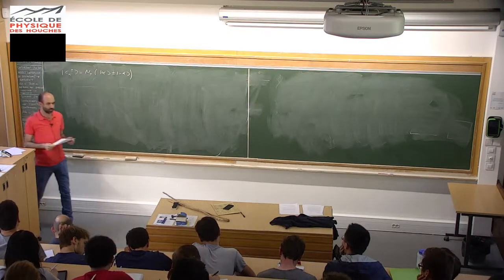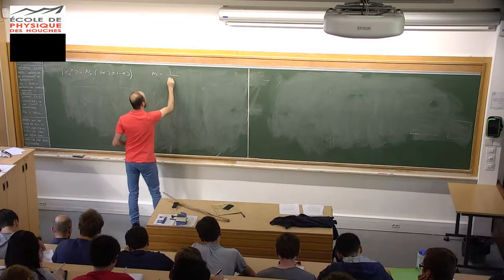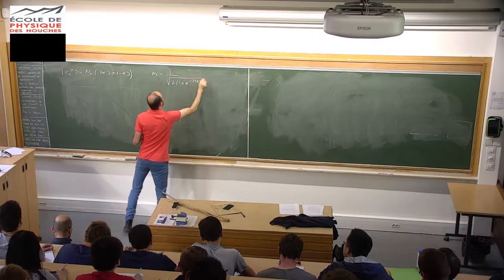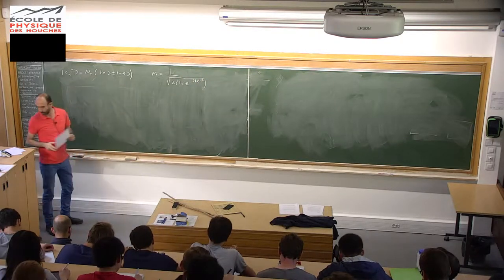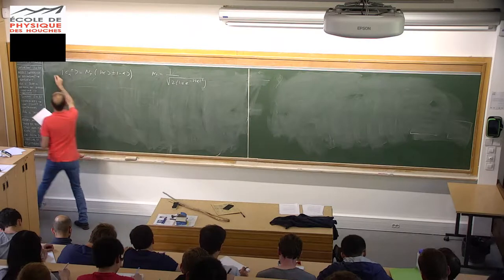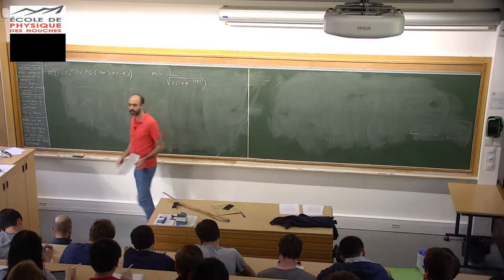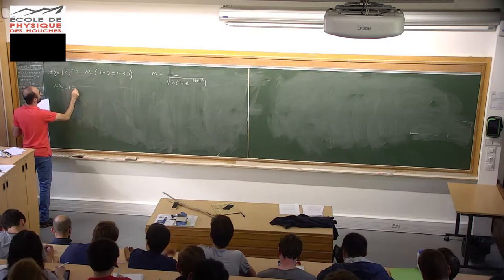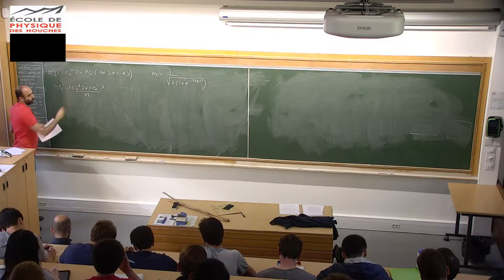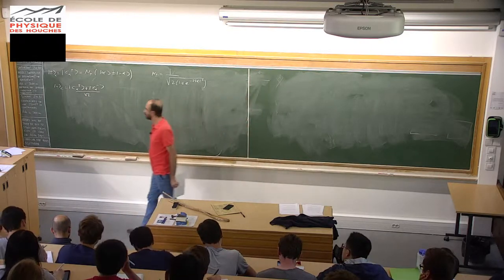The two Schrödinger cat states we're going to be using are what I call cat-alpha-plus and cat-alpha-minus, which are basically even and odd superpositions of two coherent states, plus-alpha and minus-alpha, with normalization given by 1 over square root of 2 times (1 ± exp(−2α²)). This normalization is very close to 1/√2, exponentially close in the size of the cat.